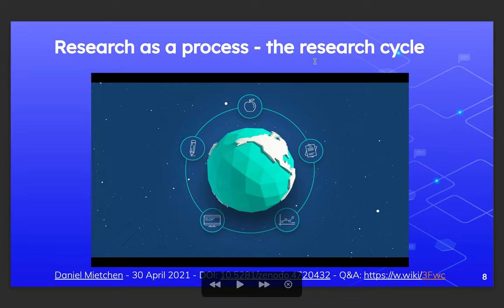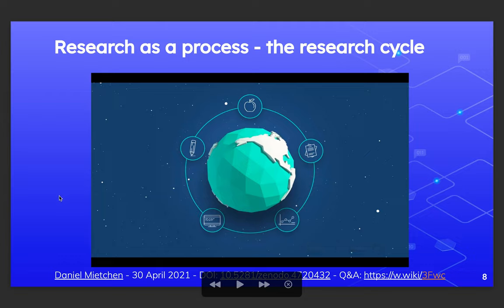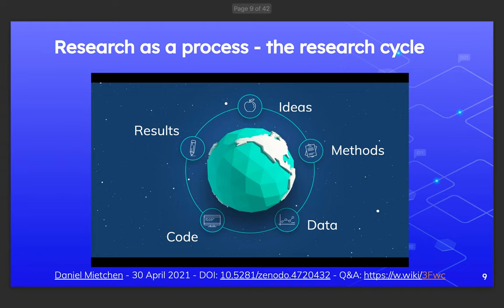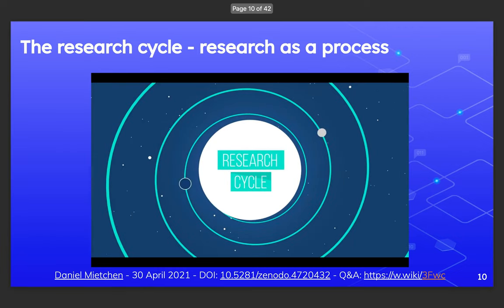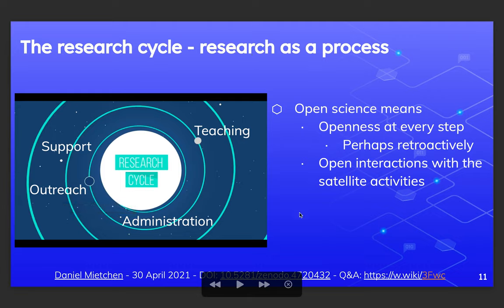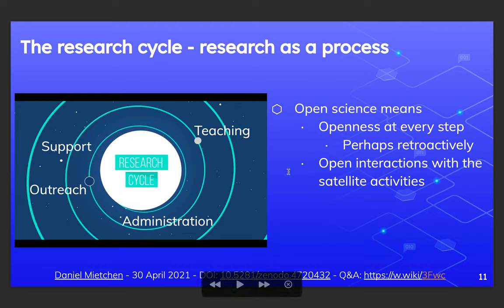You can start with an idea, which is transformed into methods; those methods generate data; the data are combined with software; and in the end, you have something to write about. You could do this at any step in the research cycle. The research cycle doesn't act in a vacuum. Actors involved — like researchers or technicians — might also be involved in what I call satellite activities: technical support, outreach, teaching, administration, and related matters. Openness at every step is possible in principle.